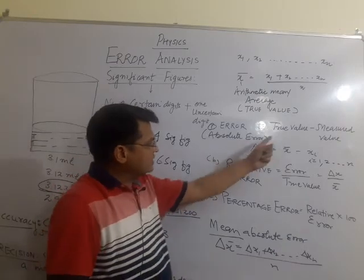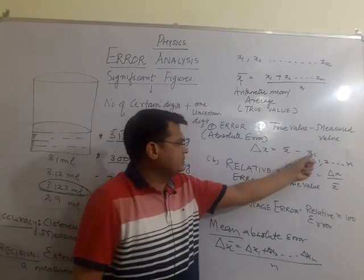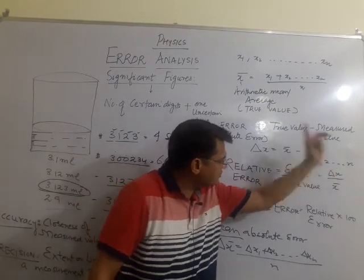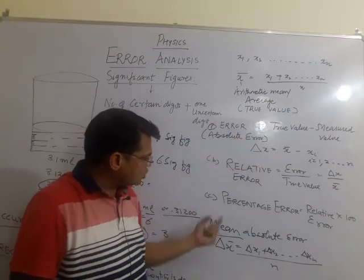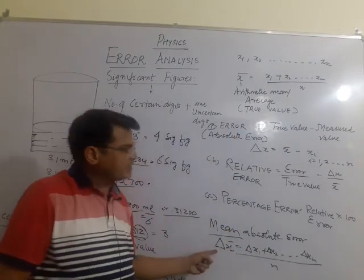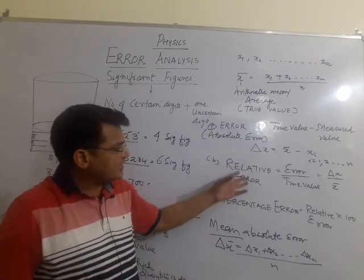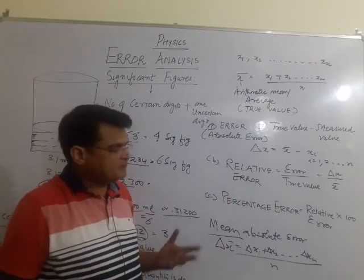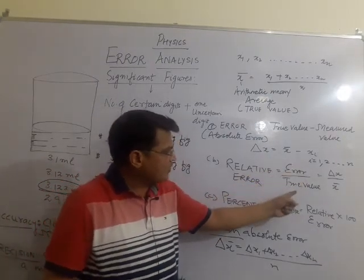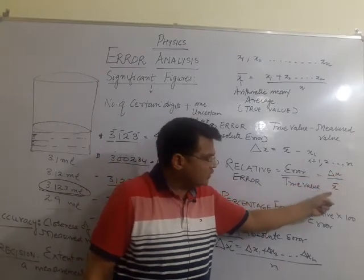Absolute error is defined as the difference of true value and measured value, where the true value is x-bar and the measured values are x-i. The mean of all absolute errors is called mean absolute error. The next category is relative error, also called fractional error, which is given by the ratio of the mean absolute error to the true value — delta x divided by x-bar.